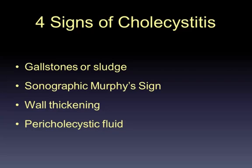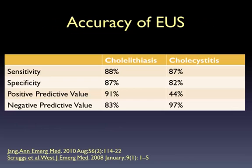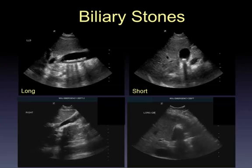The signs of cholecystitis to look for: gallstones or sludge, the sonographic Murphy sign — tenderness right at the gallbladder compared to the rest of the abdomen — gallbladder wall thickening, and fluid around the gallbladder. Regarding accuracy: emergency physicians diagnose cholelithiasis and cholecystitis with sensitivities in the 80–90% range and strong positive predictive values, very comparable to radiology colleagues. Even the best radiology ultrasound can sometimes miss biliary tract disease.